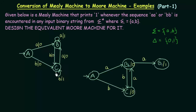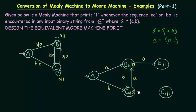For state C: on getting input small a, C goes to B with output 0, so I can send it to the existing B0. On getting input small b, C stays in C itself and should give output 1. But since C already has output 0 associated to it, I cannot do that. So I have to create another state C1 with output 1. I will send C to C1 on getting input small b.